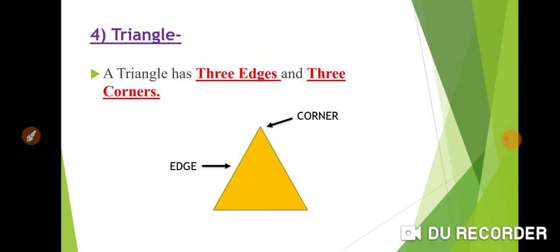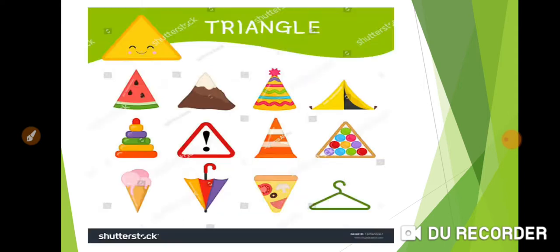Triangle. A triangle has three edges and three corners. See so many different types of triangle shaped things in this picture.